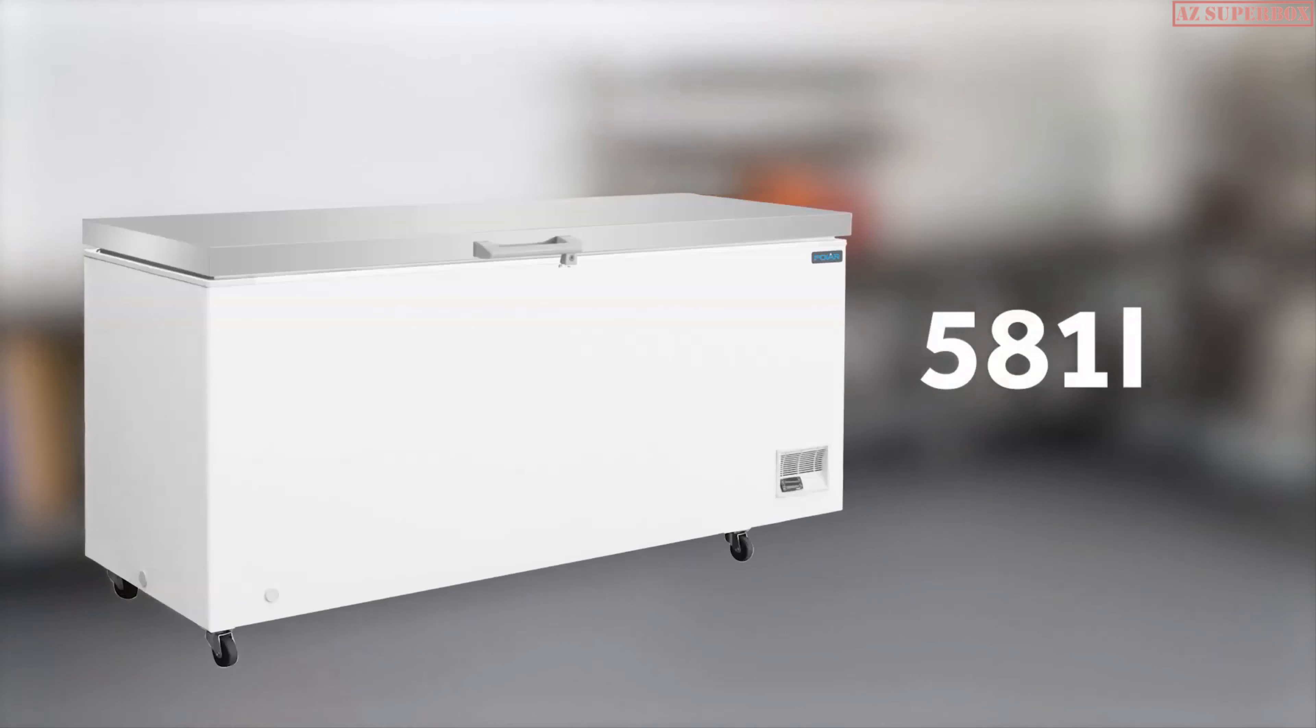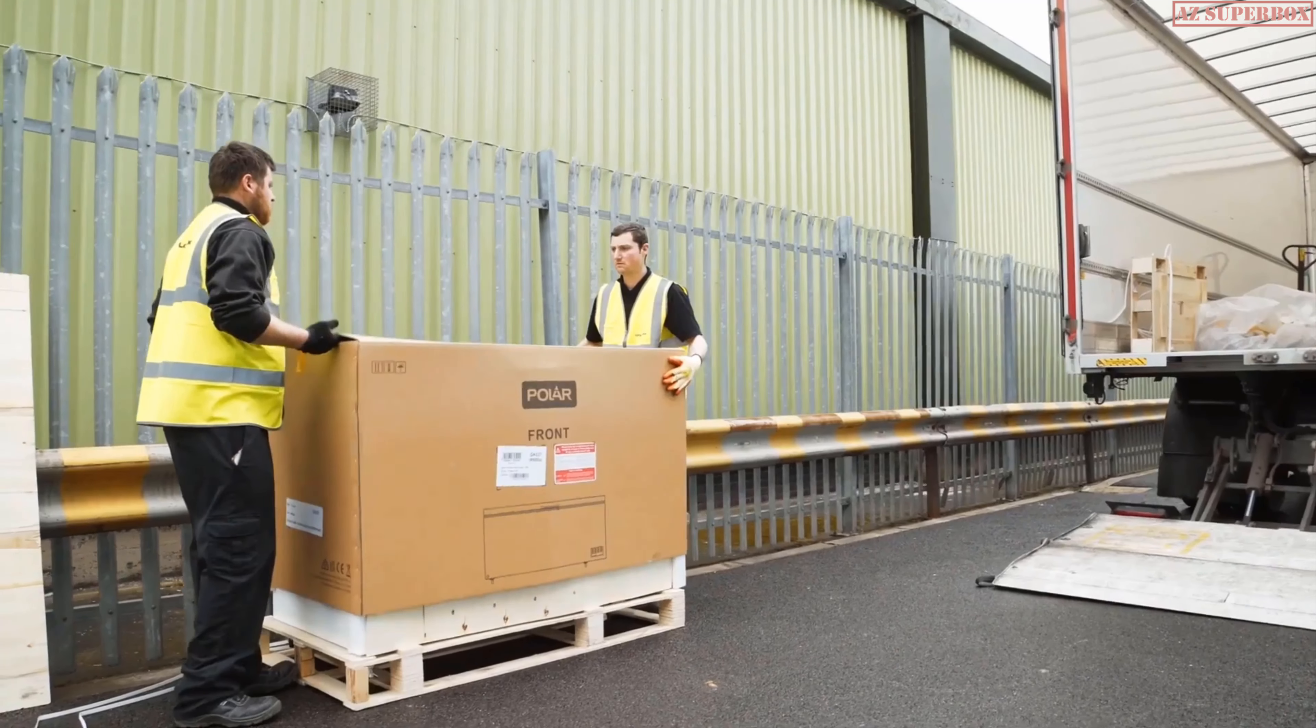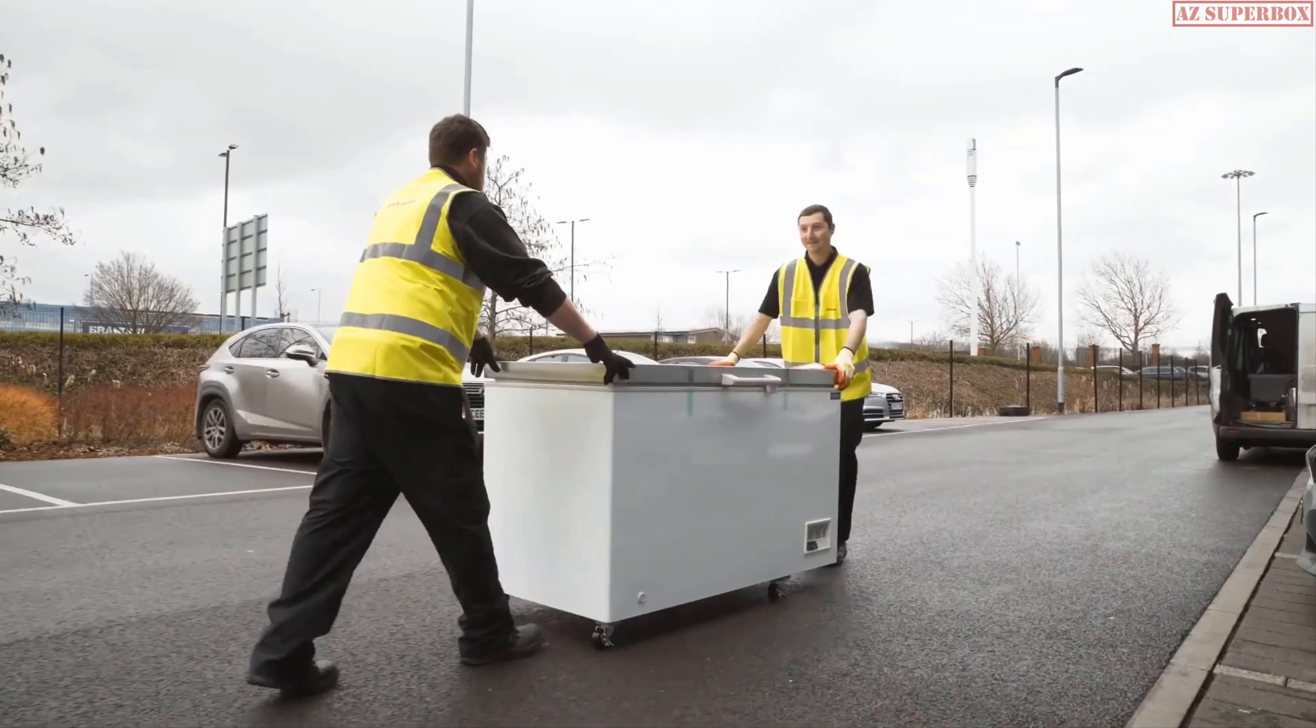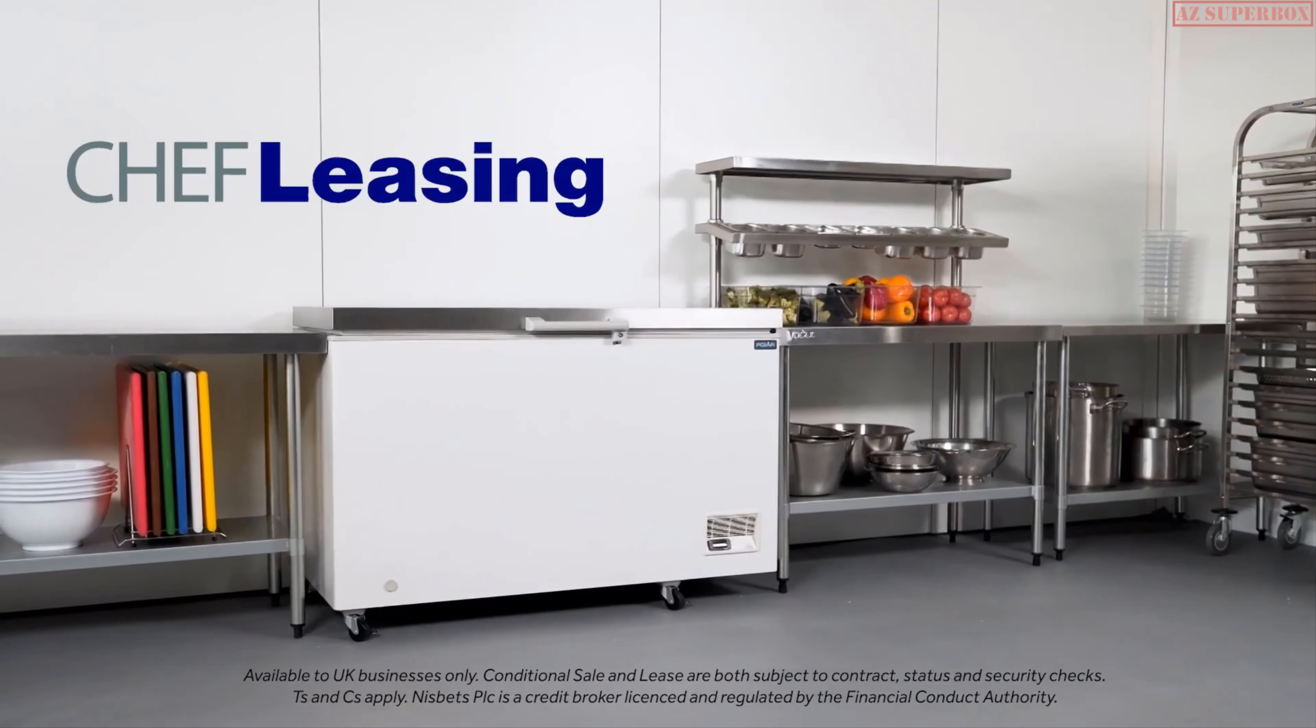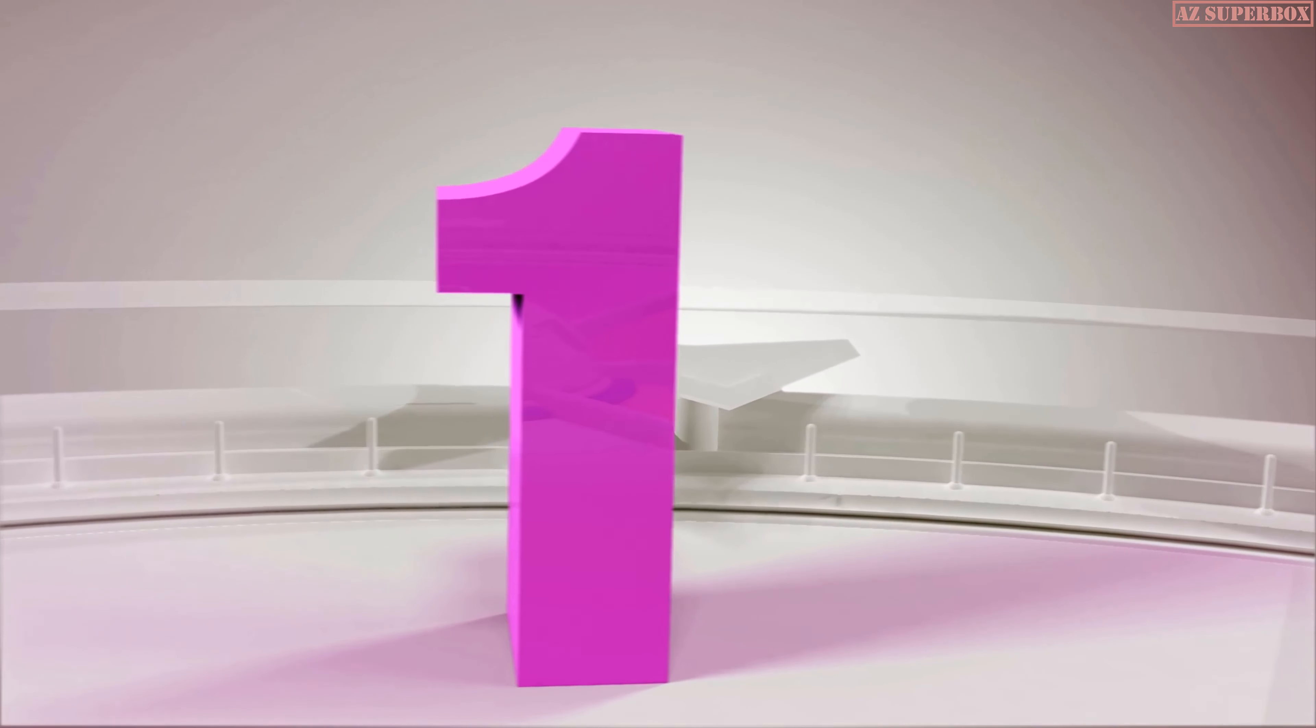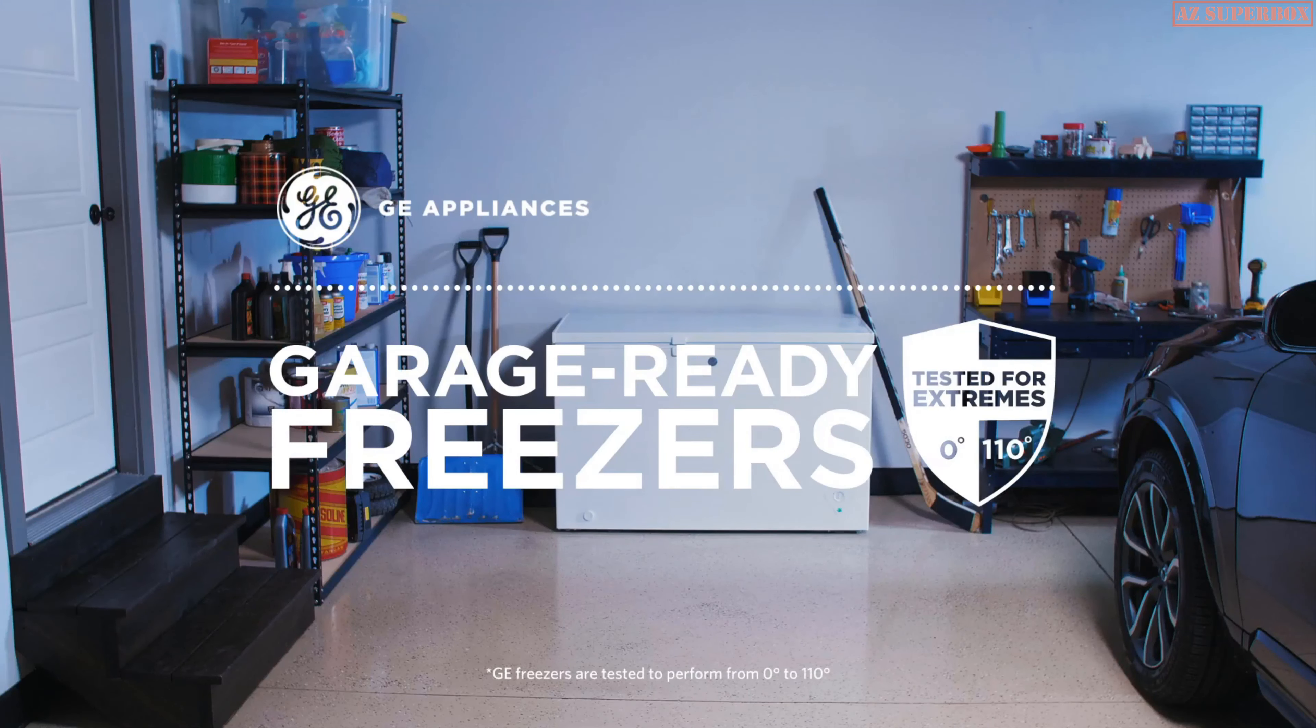This stainless steel lid also acts as a sturdy work surface. It's equipped with casters for easy mobility and has a generous storage capacity of 378 or 581 litres. Upgrade your kitchen with the latest Polar range, designed for efficiency and freshness. Both appliances are available with next day delivery, with unpacking and positioning as standard. Looking to spread the cost? 0% finance and chef leasing options are also available.